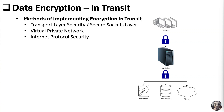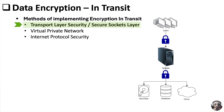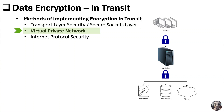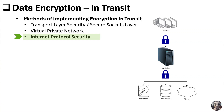First is Transport Layer Security (TLS) or Secure Sockets Layer (SSL). These are protocols used to encrypt data transferred over networks, commonly used in securing HTTP, HTTPS, email, messaging, and other communication channels. Next is Virtual Private Networks (VPNs), which encrypt data between remote users and a corporate network, creating a secure communication tunnel. Another method is Internet Protocol Security (IPSec), a protocol suite for securing IP communications by authenticating and encrypting each IP packet in a communication session.